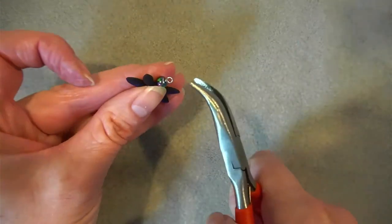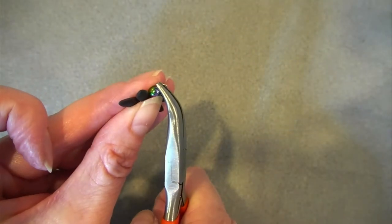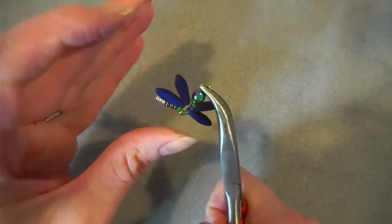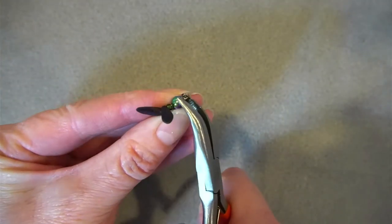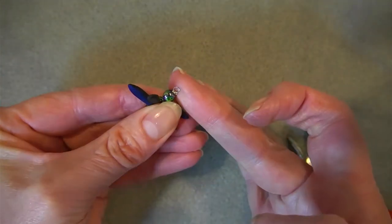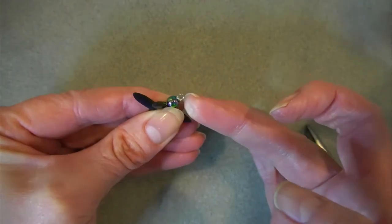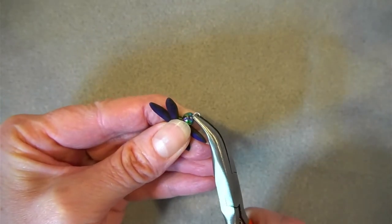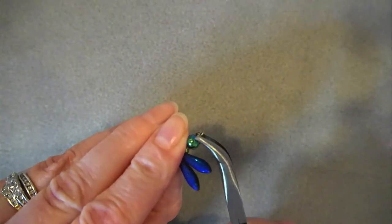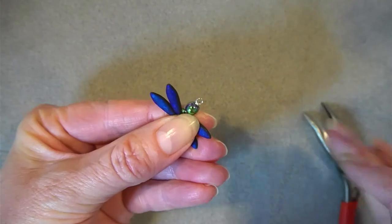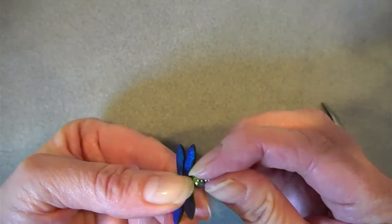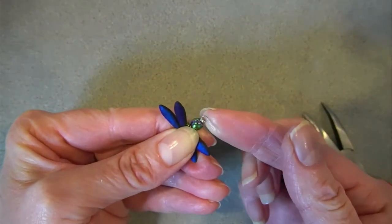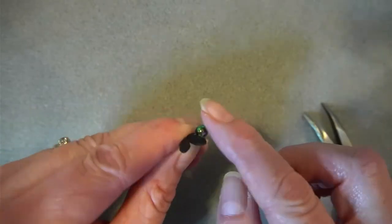Now taking my bent nose pliers, I'm just going to give that end a squeeze to make sure that all of those little ends are nicely tucked in. And you can just give it a feel to see if it's sticking out, and mine still is, so I'll give it a bit more. There we go. The last thing you need is that catching on your clothing or someone's skin.